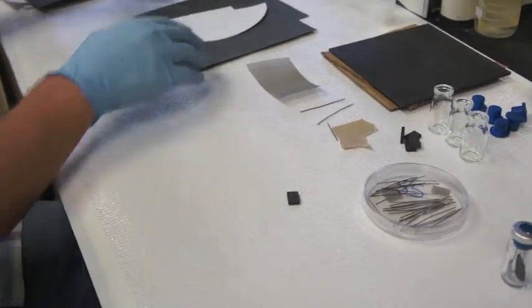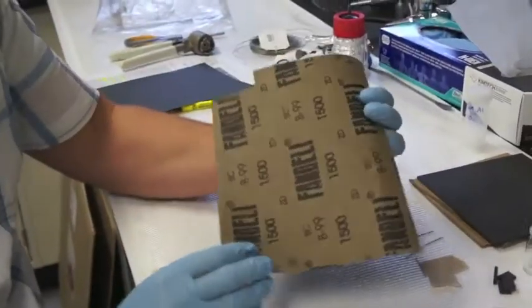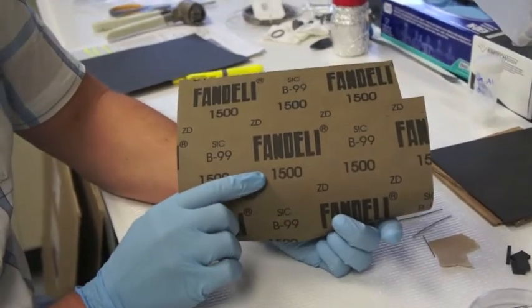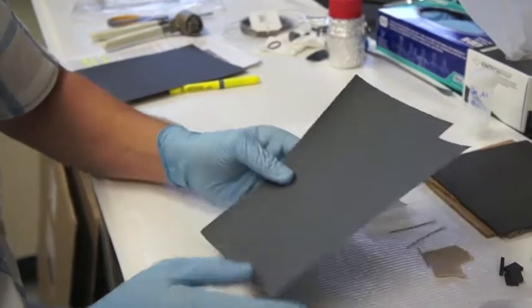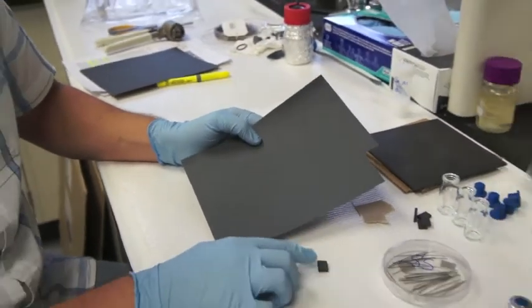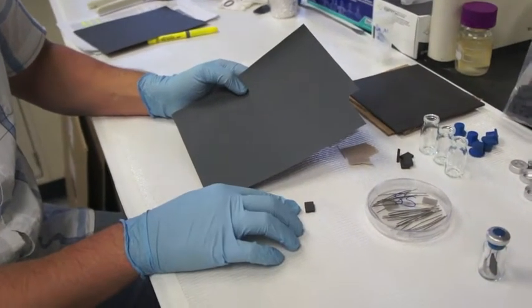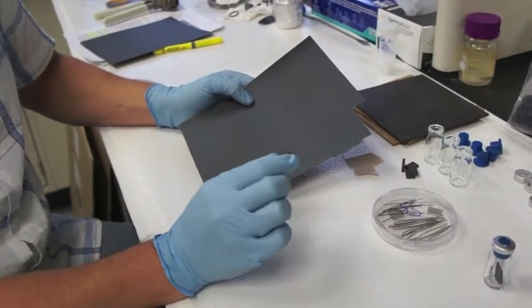And the next step, use a finer grit, so this is 1500, and do the same exact process of figure eight circular motions in order to polish the surface.